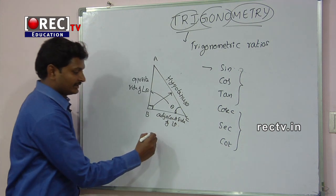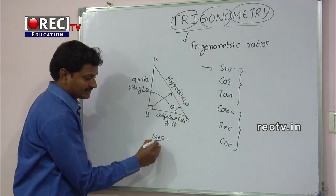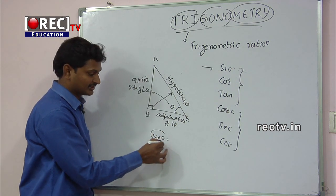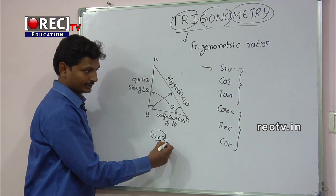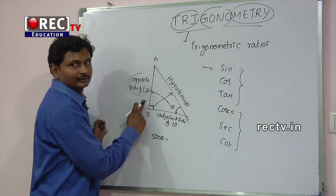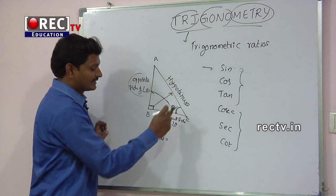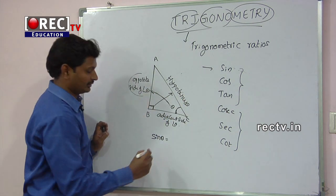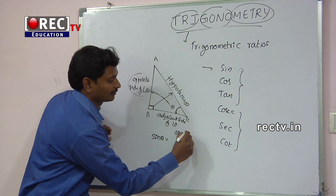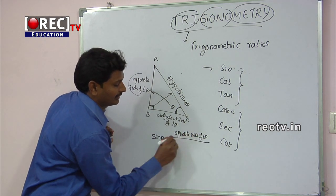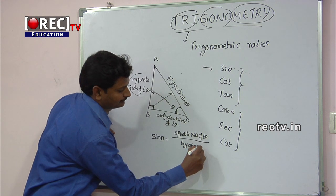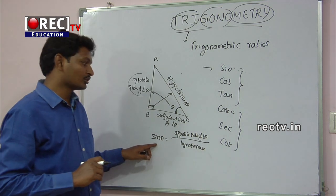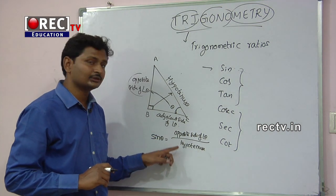Now, sin theta is defined as applying the sin function to theta. Sin theta is not the multiplication of sin and theta — it is a completely single function. Sin theta is equal to the opposite side of angle theta divided by hypotenuse. So sin theta is the ratio of the opposite side to the hypotenuse, and we call this a Trigonometric ratio.